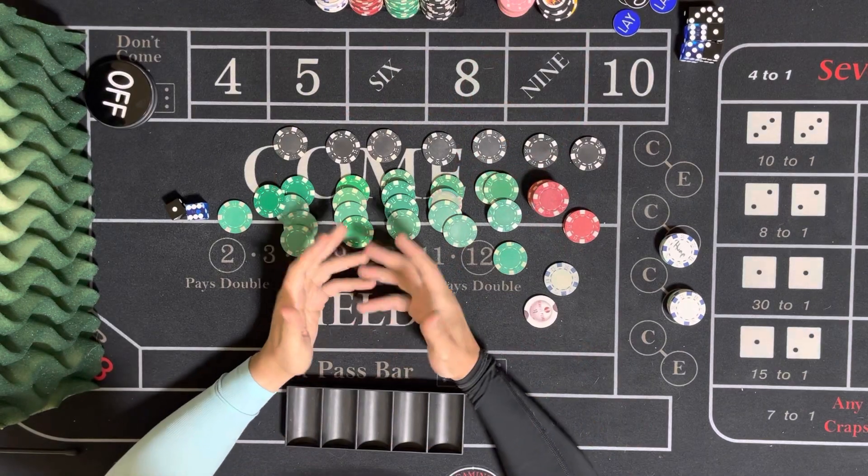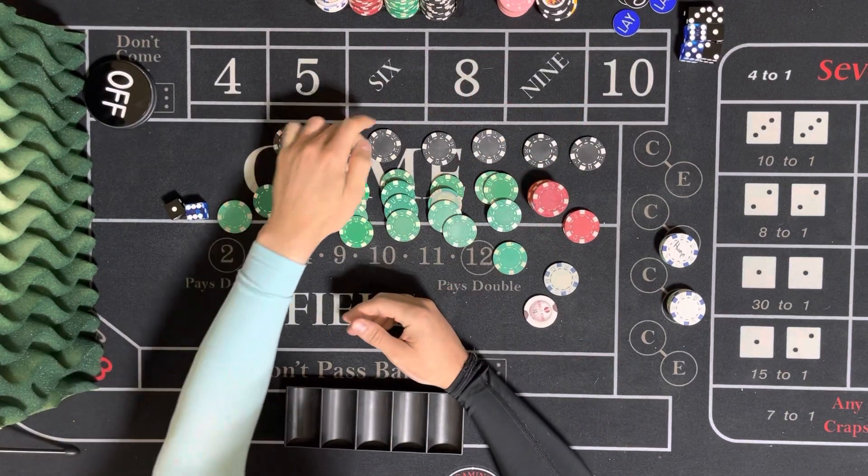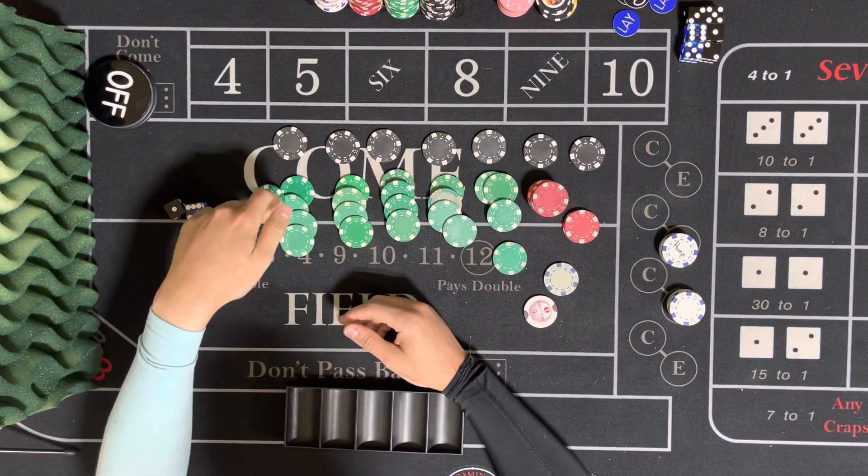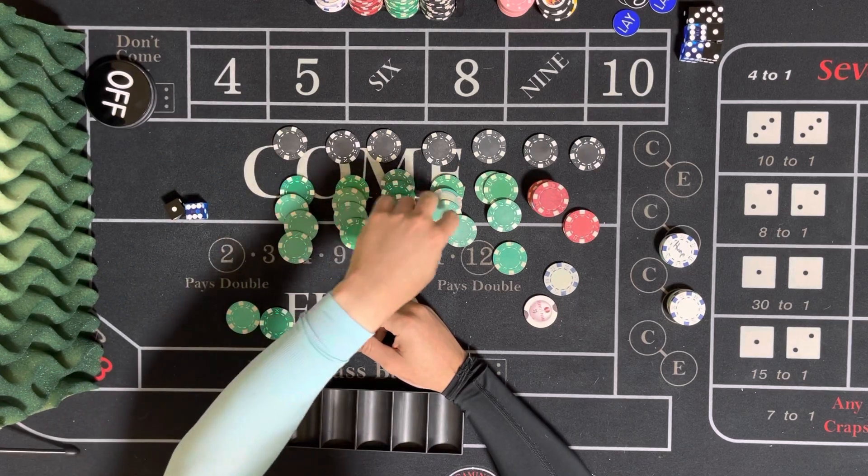Alright guys, we're keeping it very simple. We started out with $1,307. So 1, 2, 3, 4, 5, 6, 7, 8, 9, 10, 11, 12.